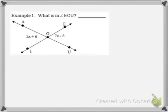Let's look at an example. Here we are looking to find the measure of angle EOU. This angle EOU is congruent to the vertical angle on the opposite side, AOI. Because they are congruent they must have the same measure. So we could say 5x plus 6 is going to be equal to 7x minus 8 because their measures are the same. I just have an equation to solve.